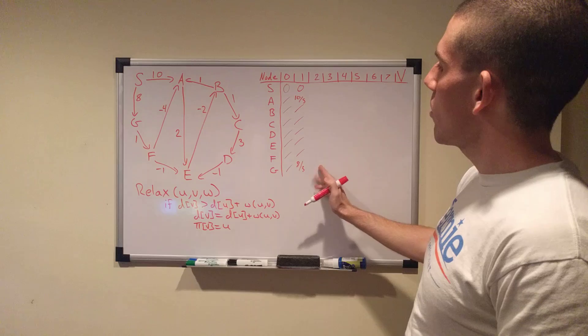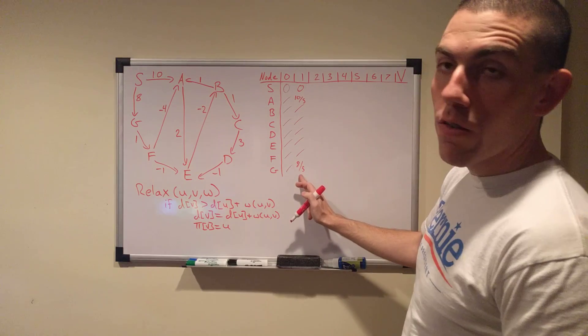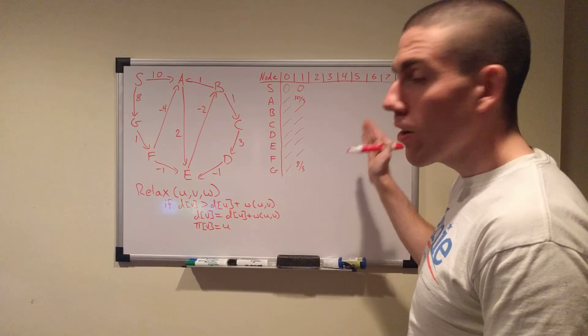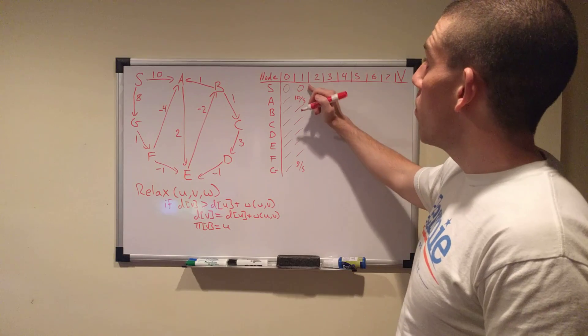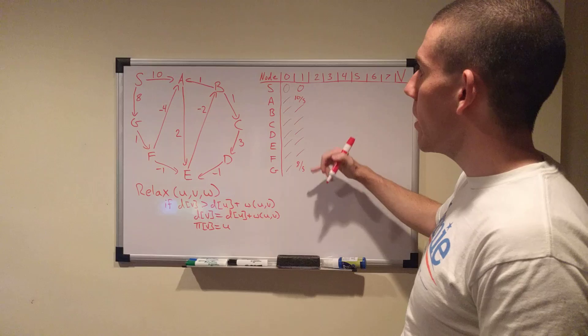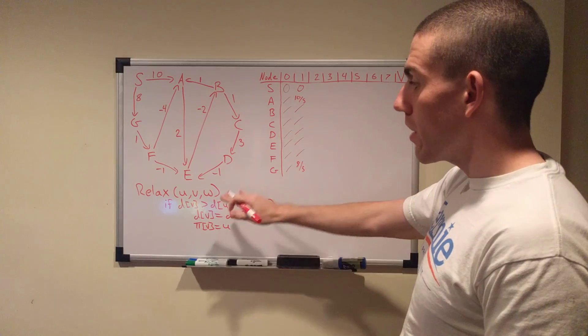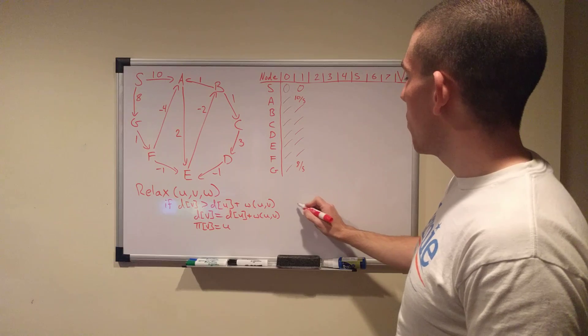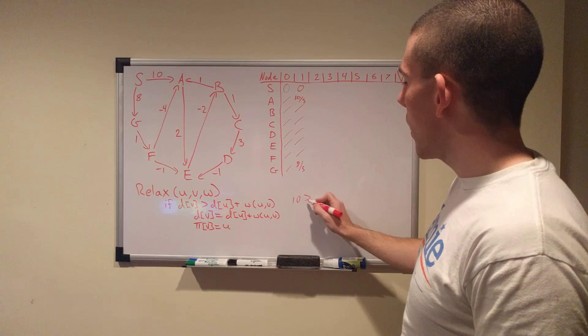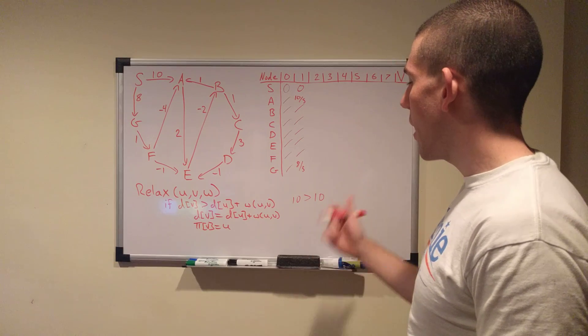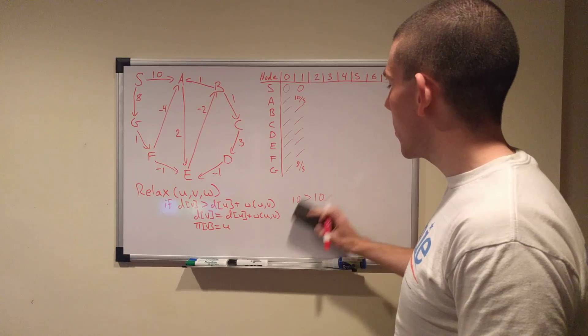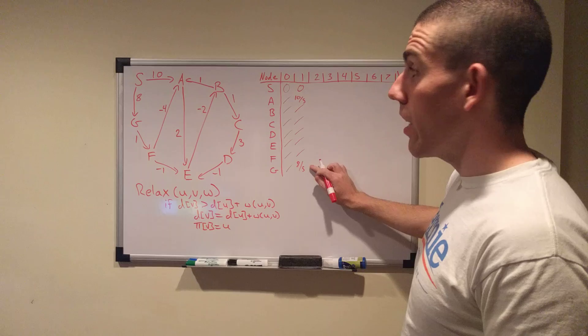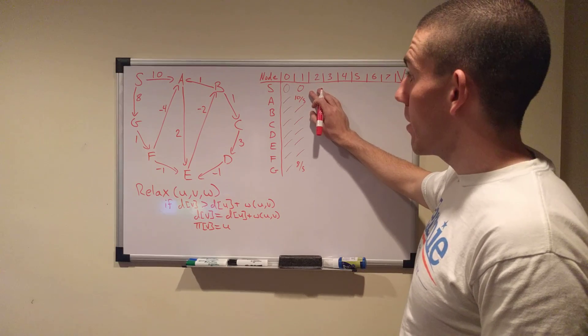Now, in the second iteration, we're looking at this version of the distance array. This is, each one of these columns is the latest version of our distance array. So we relax S, we see that it points to A, we see that it points to G, and we get something a little different going on here. We see it points to A at a cost of 10. So basically what we end up with is the inequality 10 greater than 10. No, it's not. It's equal to 10. So A doesn't change. G doesn't change. Nothing changes when we relax S.